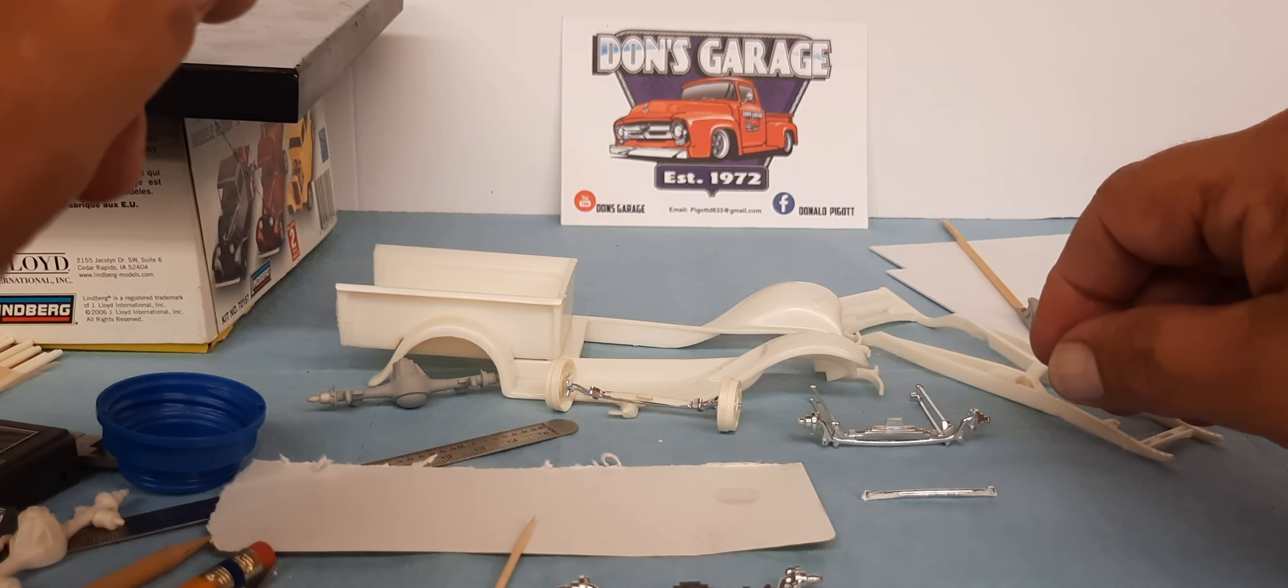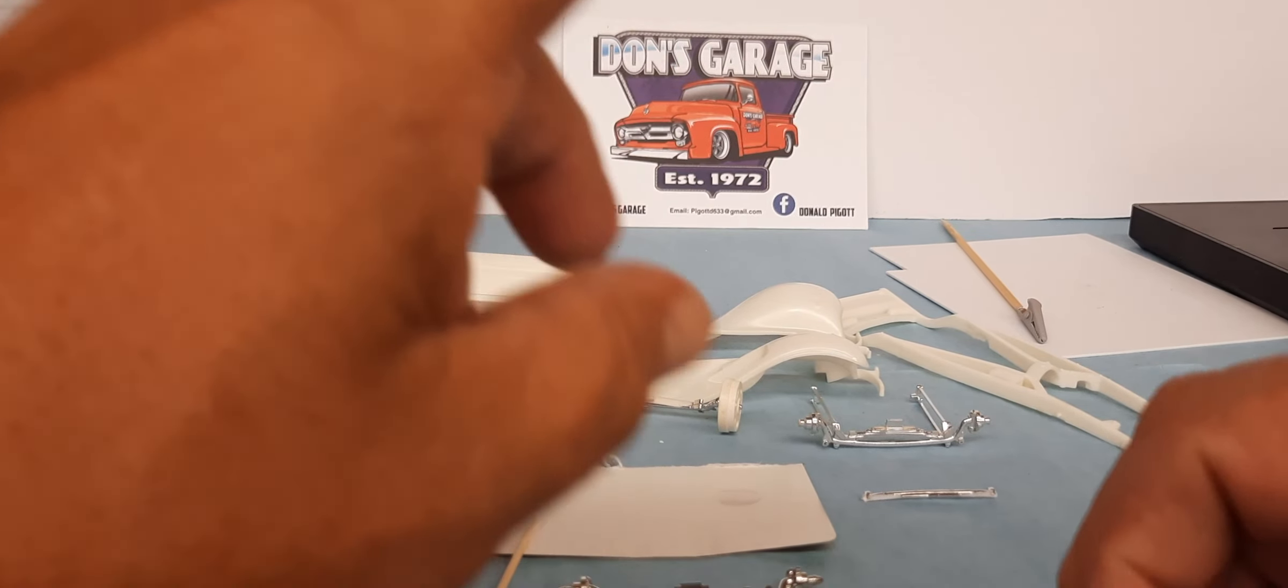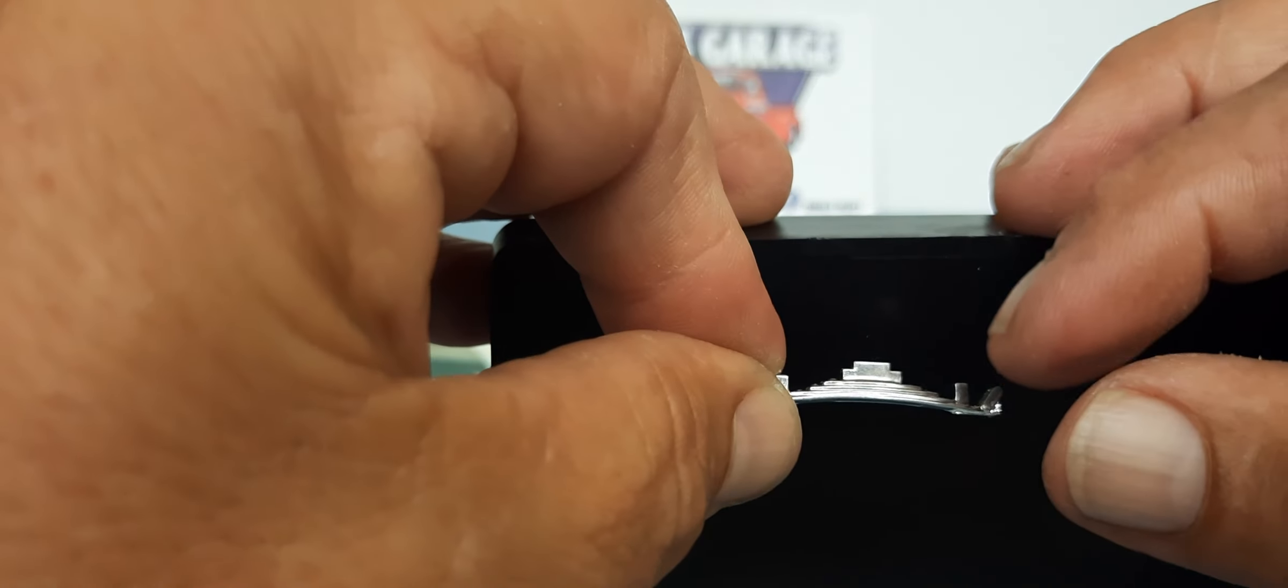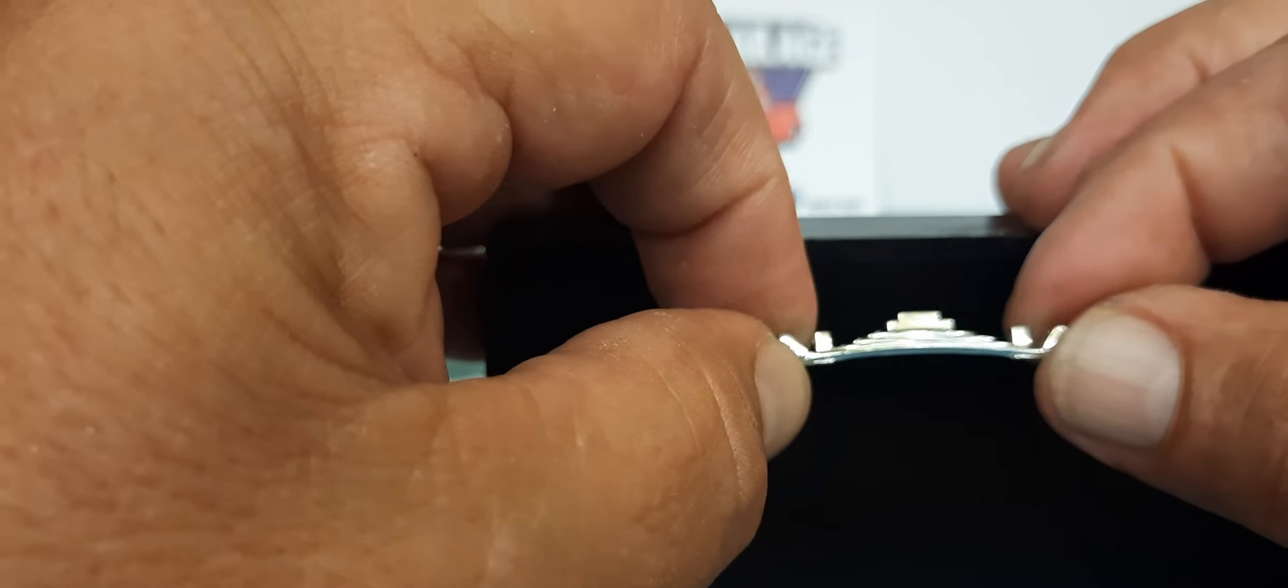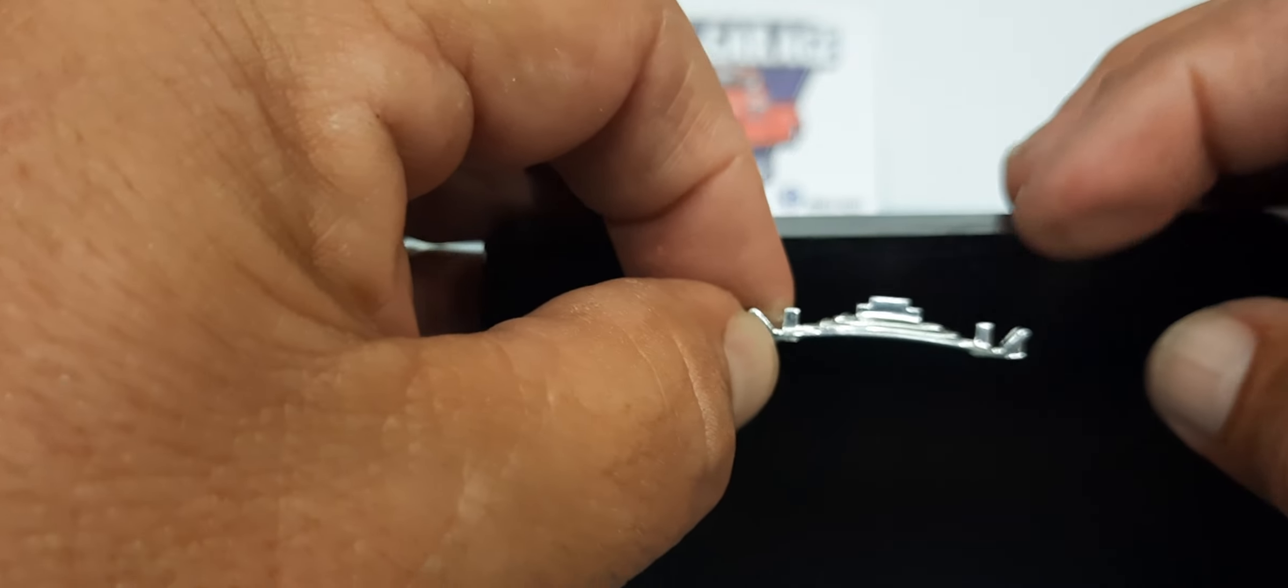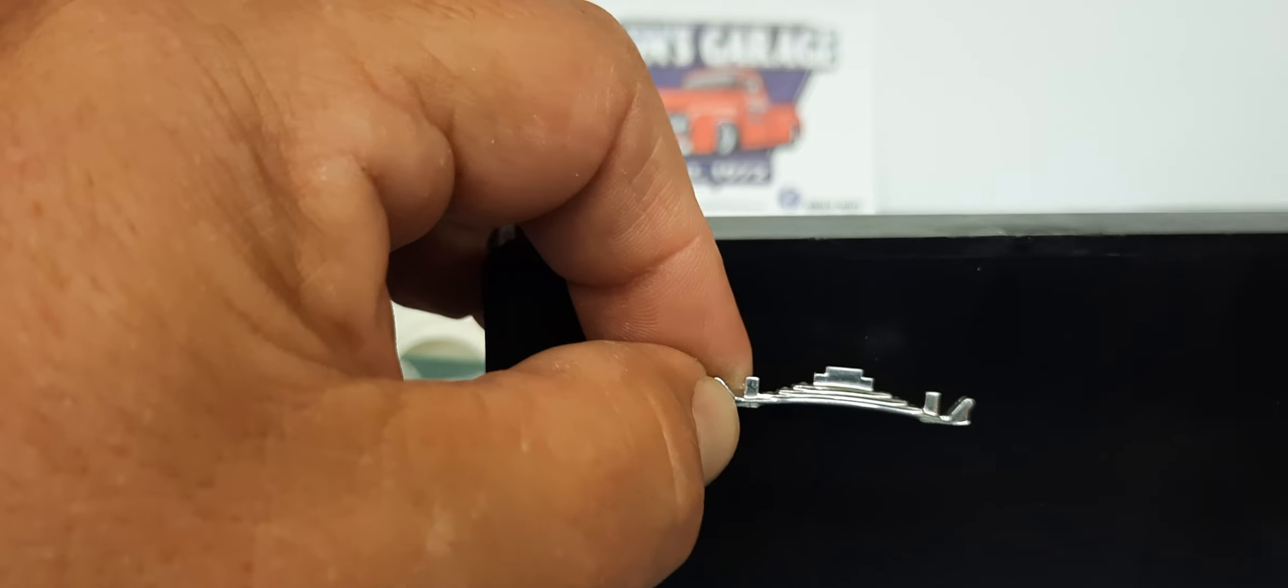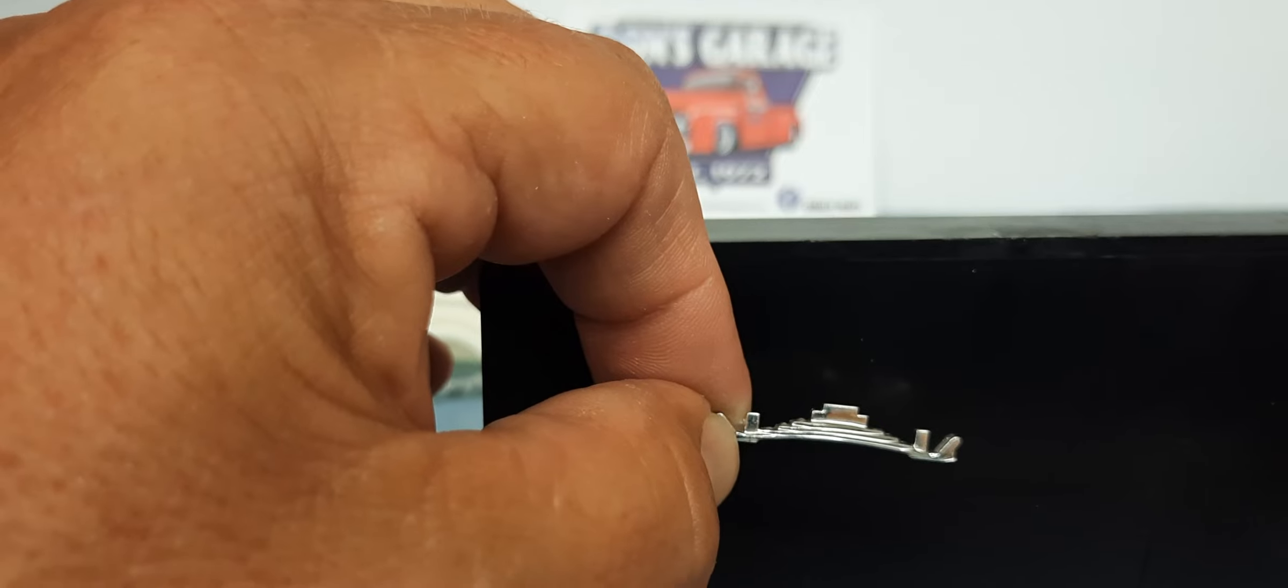So what I've done first, like I said you've seen the stock one, the kit stock one. I took another one, I've got a lot of extras. I cut the buggy spring off, there it is just like it is to go in the kit.